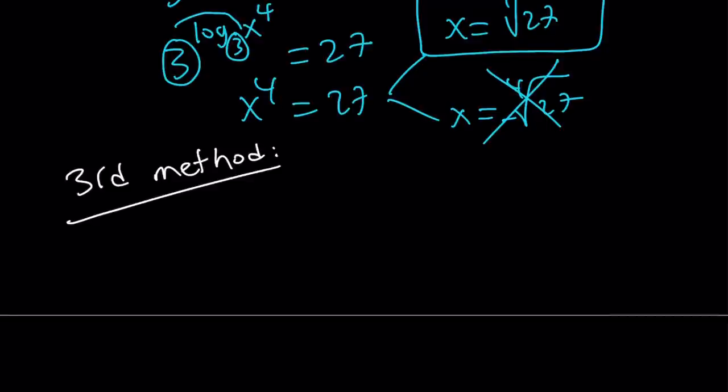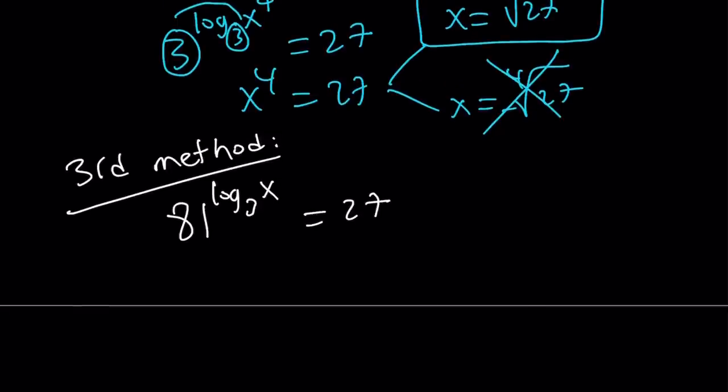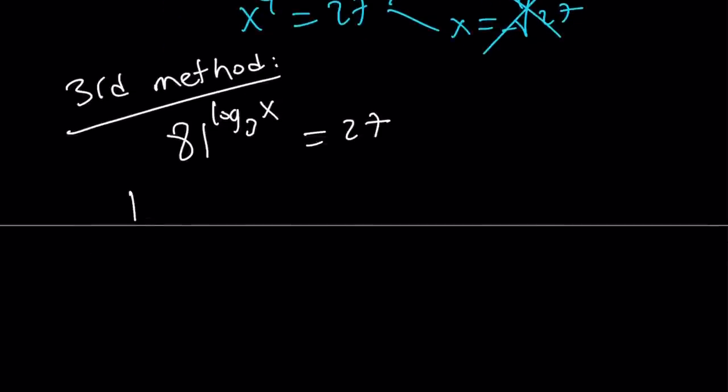Great. Okay. So you might find these methods fairly similar, obviously, because we're solving the same problem. And we're very limited in our way of solving it. But the way they are kind of set up, I think these are different methods. And obviously, you could always argue against that. Anyways, our original problem again was 81 to the power log x with base 3 equals 27. Now, I'm going to log both sides with base 3. So let's go ahead and do that. Log with base 3, 81 to the power log with base 3 of x equals log with base 3 of 27.